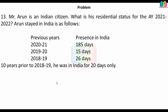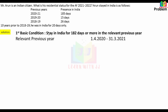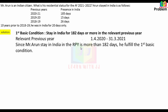Now let's check which conditions Mr. Arun fulfills. The first basic condition requires staying in India for 182 days or more in the relevant previous year 2020-21. Mr. Arun stayed 185 days, which is more than 182 days, so the first basic condition is fulfilled.